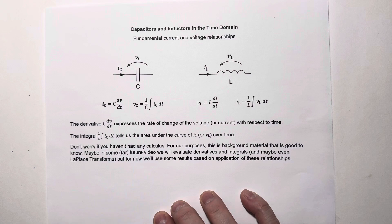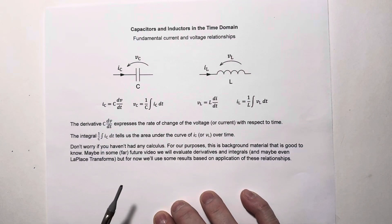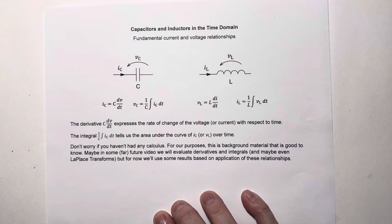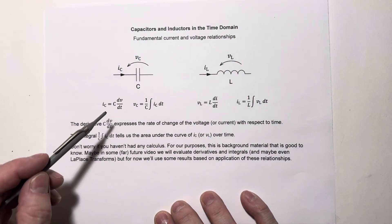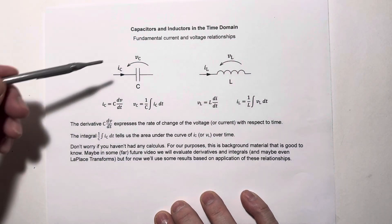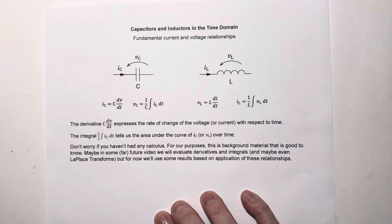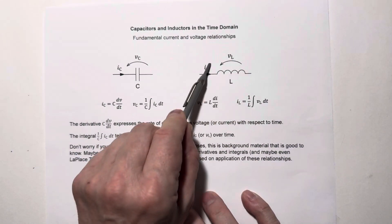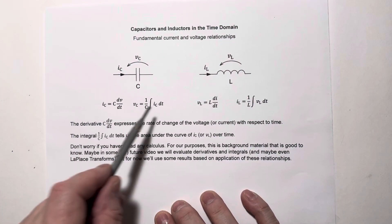What we've got in front of us right now are the fundamental relationships between current and voltage for capacitors and inductors. For the time being, I'm not going to dwell on the integrals — they're a little too abstract for what I want to explain today. Let's just take a look at these derivatives. This first equation tells us that the current flow into the capacitor is proportional to the rate of change of the voltage across the cap with respect to time. The faster you change this voltage, the more current flows. Similarly, with the inductor, the voltage drop across the inductor is proportional to the rate of change of current flowing through the inductor — the faster we change the current flow, the bigger the voltage is across the inductor. The capacitance and inductance are the scaling factors for these rates of change.